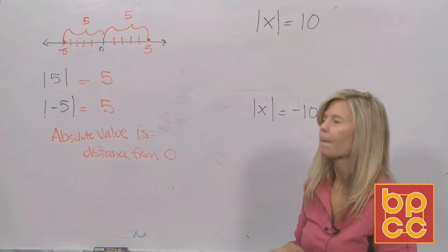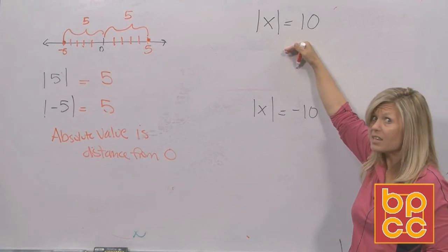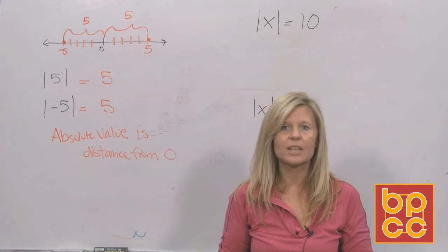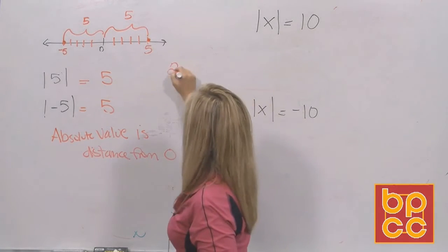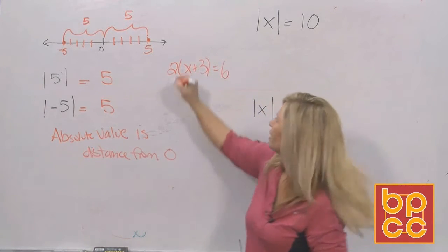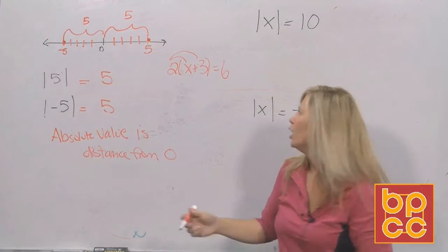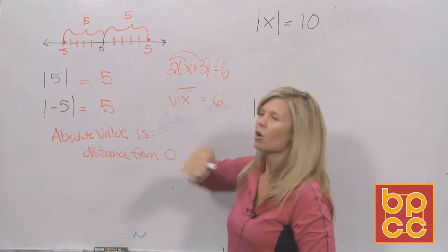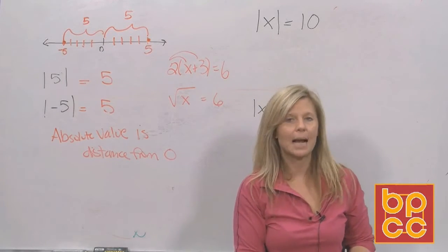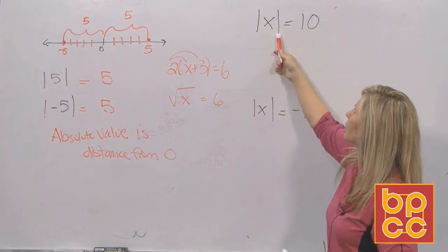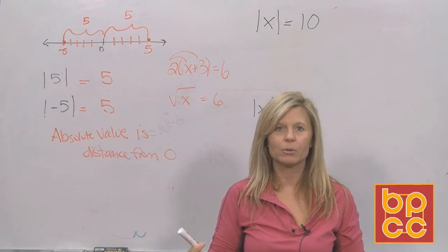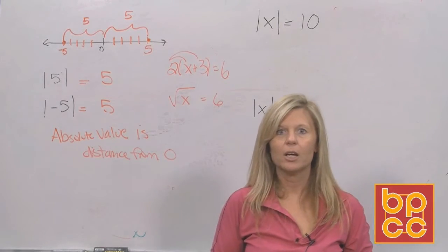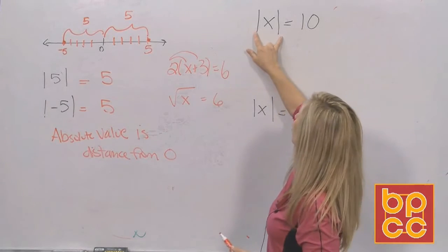Now we're going to learn how to solve an absolute value equation. It's obvious it's an absolute value equation — it has the symbol, the absolute value bars, what I call touchdown bars. We've seen that if we have a symbol, we like to get rid of it. We get rid of parentheses by distributing. We get rid of a square root by squaring. But there is no way to do absolute value to get rid of it — it's not a parenthesis, it's not a square root. So the problem is how to solve this equation and get rid of those bars.